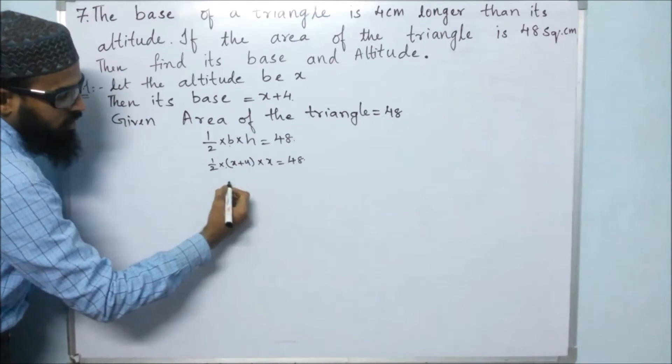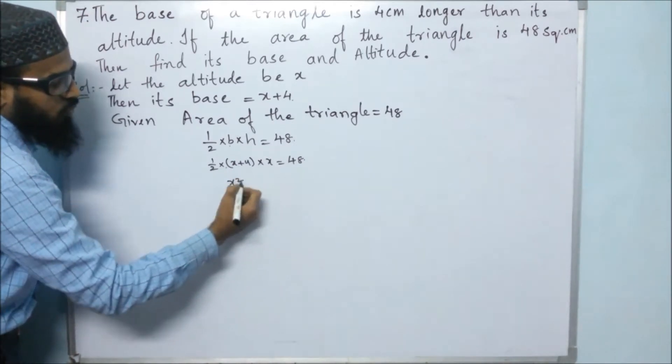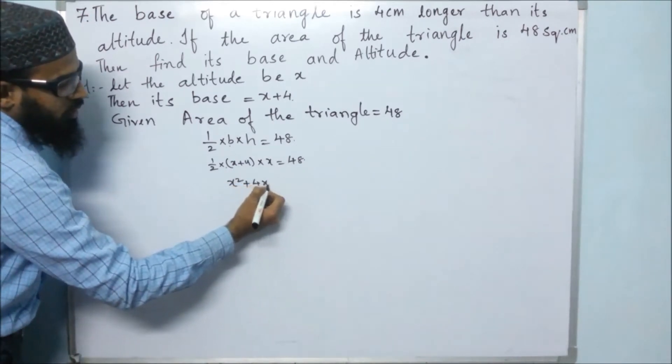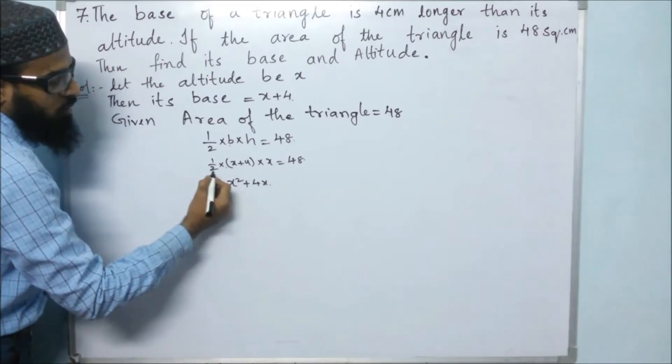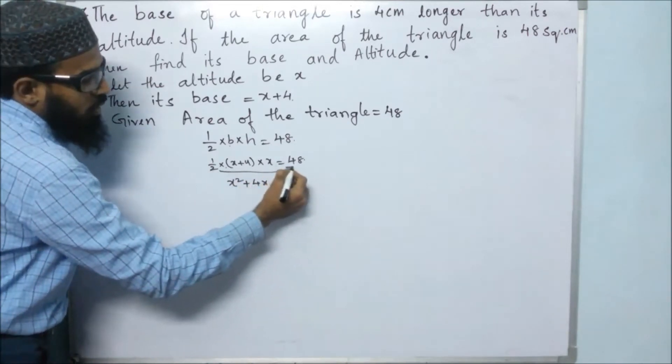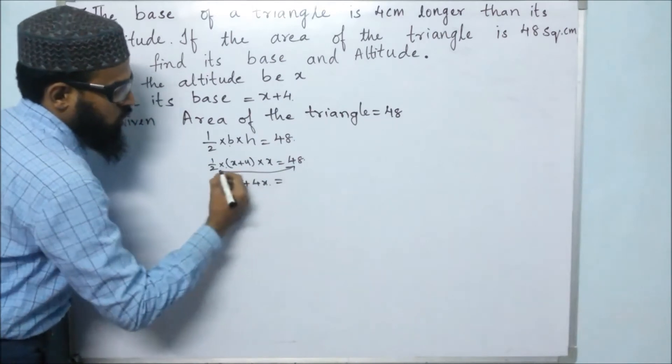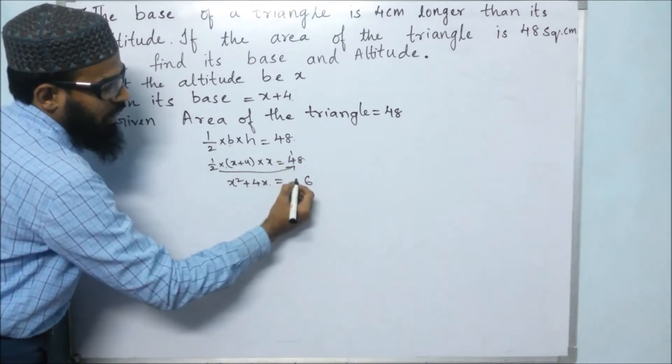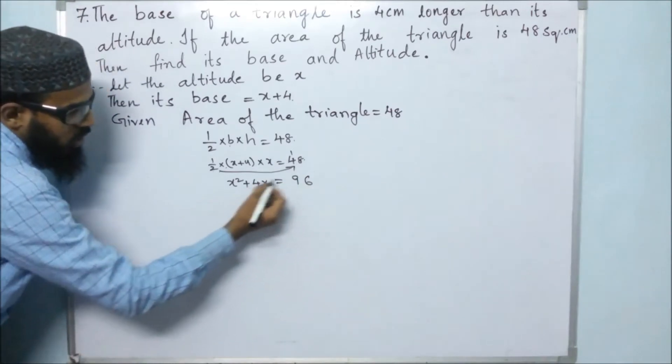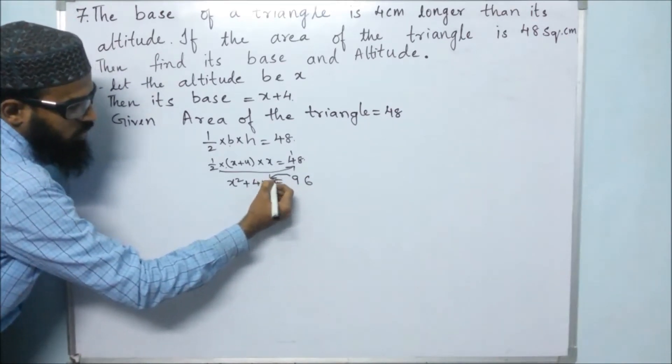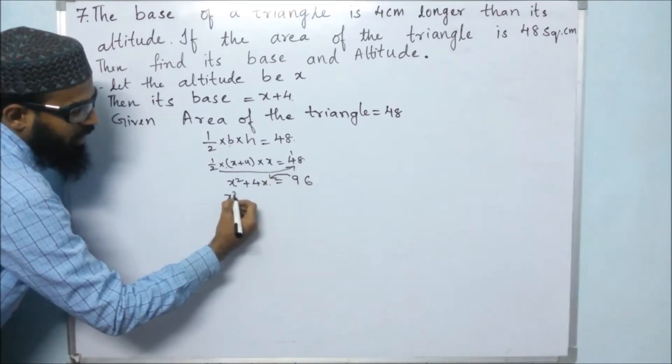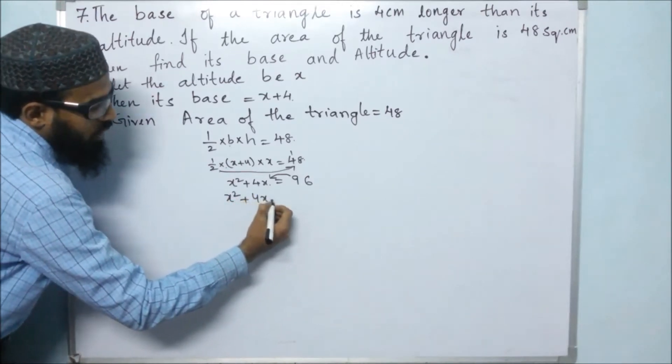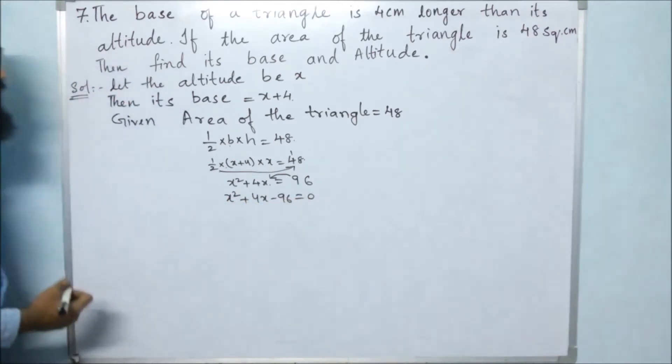X into x, that is x square. X into 4 is 4x, divided by 2. These 2 we can multiply with 48, so we will get 2 eights are 16, 2 fours are 8, which is 96. Then next, we can bring this 96 to this side. It will become negative: x square plus 4x minus 96 equals 0.